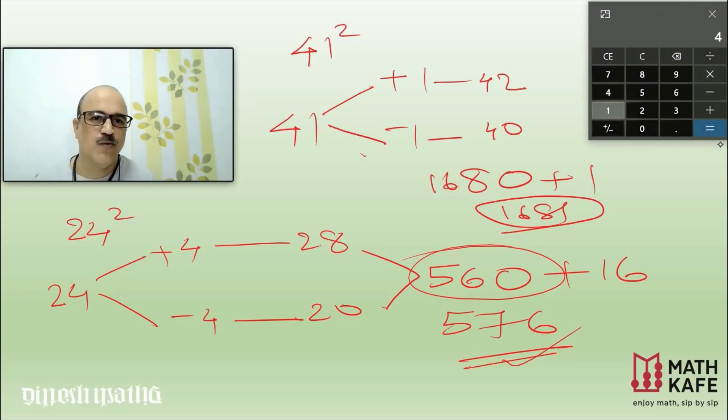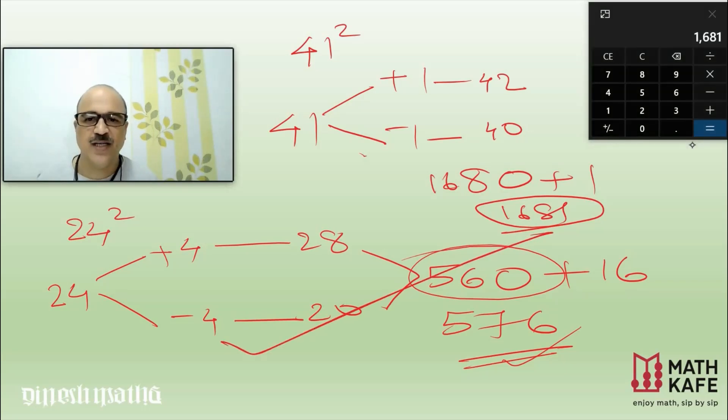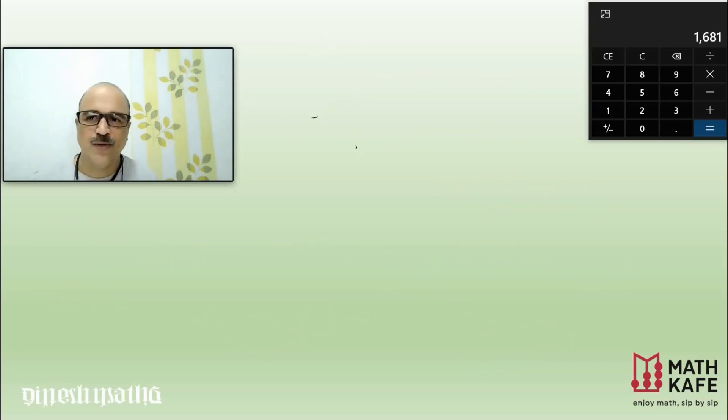Let us check our answer once again: 41 times 41, it's 1681. Absolutely we are right. So this is our technique. Any number which ends with any digit, you can find the square of a number by using this technique. Now you may be thinking that this method will work only with the two digits.